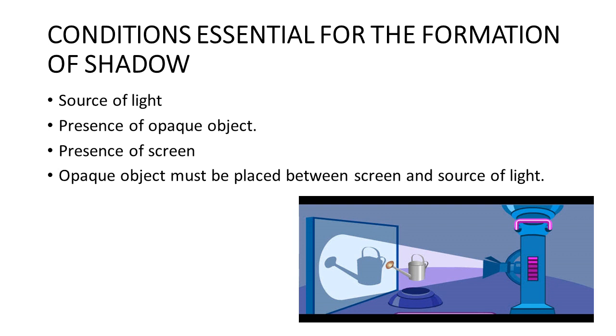Then, there must be an opaque object to block the path of light. What is an opaque object? Opaque objects are that that does not allow light to pass through it, such as a ball.